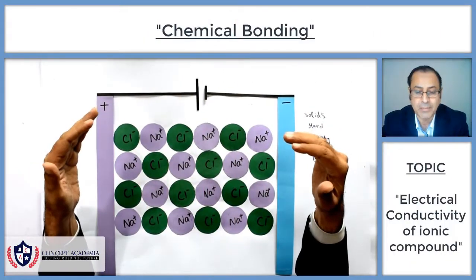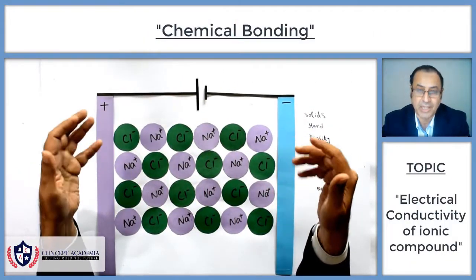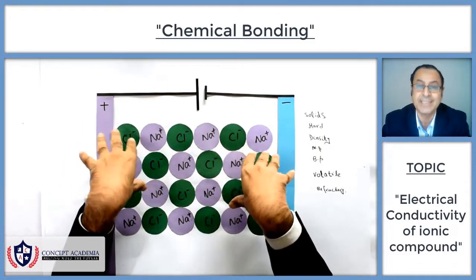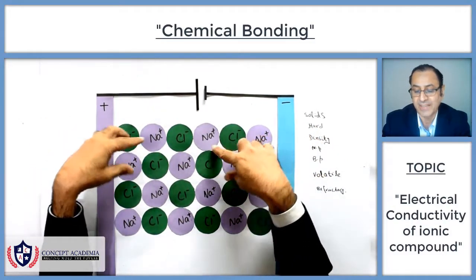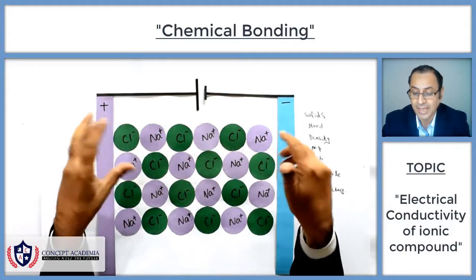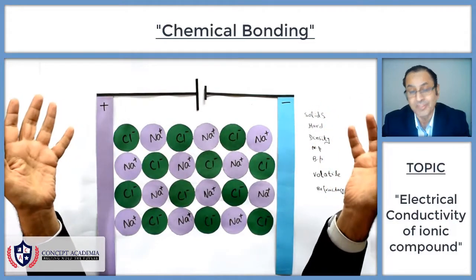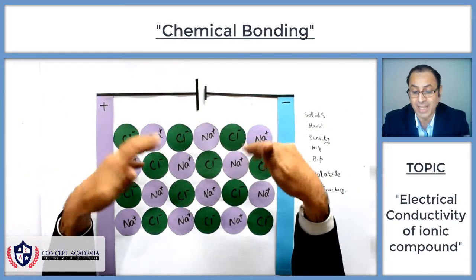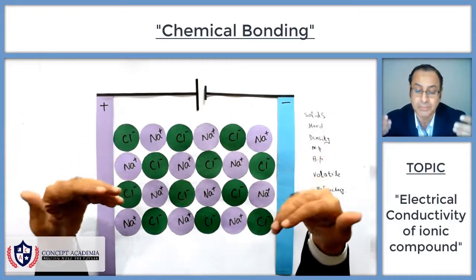Now we are going to discuss the electrical conductivity of ionic compounds. Taking the example of NaCl, you can see that the positive Na and negative Cl ions are arranged in a regular pattern, and they cannot move. They are charged particles, but they cannot move.